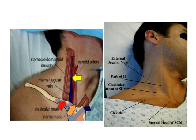Having identified the sternal head and the clavicular head of the muscle sternomastoid, let us define the triangle. The base of the triangle is formed by the clavicle. The medial part of the triangle is formed by the sternal head, and the lateral part is formed by the clavicular head. You can see the yellow arrow indicating the uppermost point of the triangle.